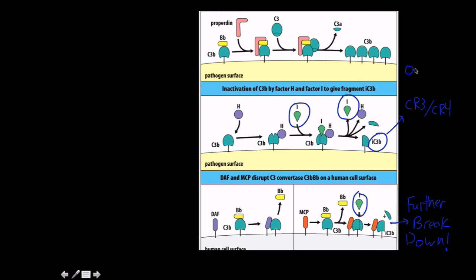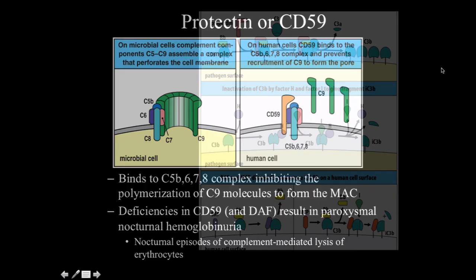I'll just go ahead and also include here that this IC3 beta is a receptor site for complement receptor 3, complement receptor 4, opsonin. So, cool.